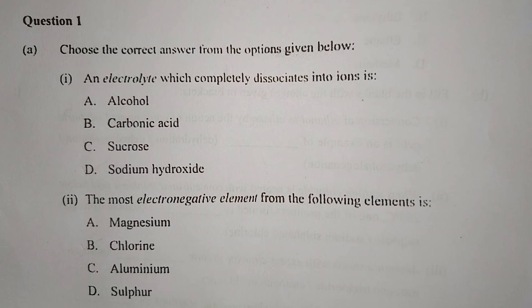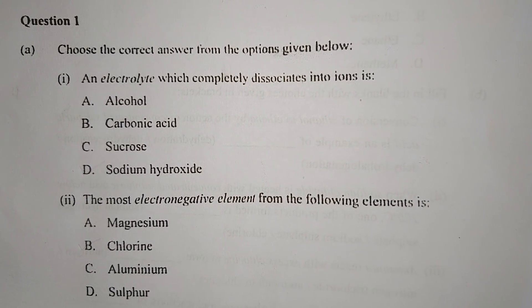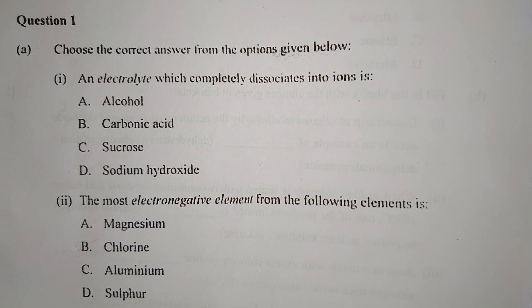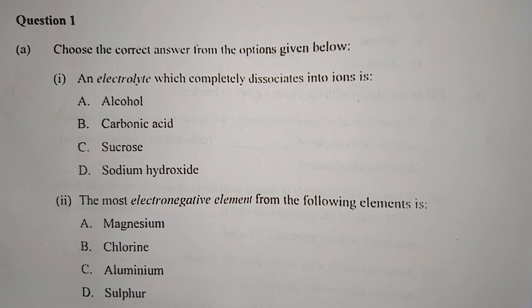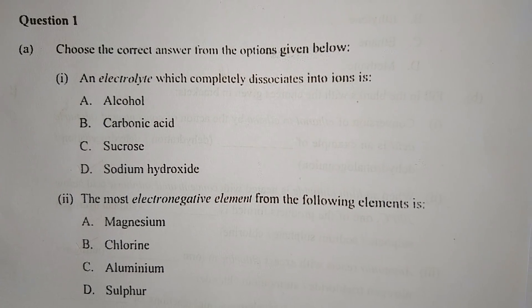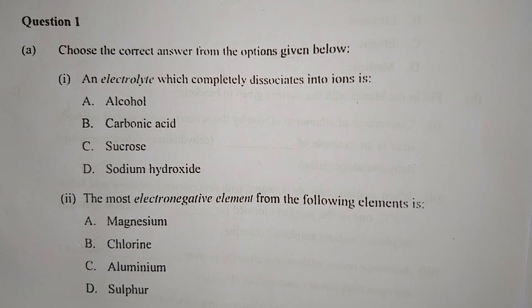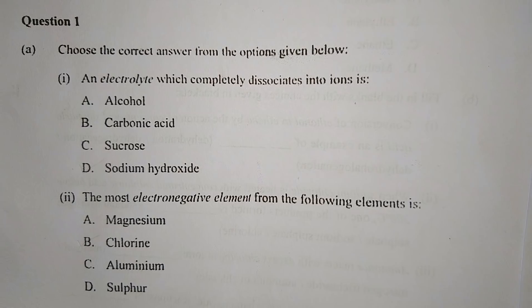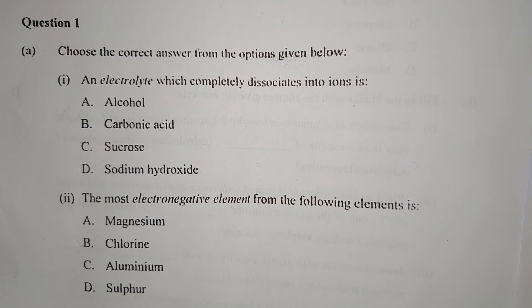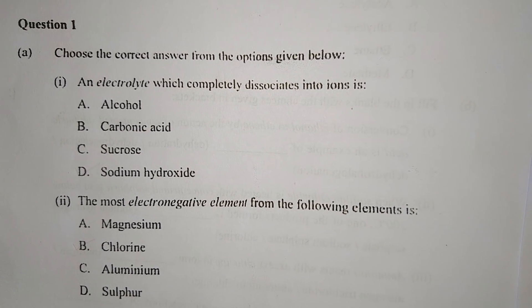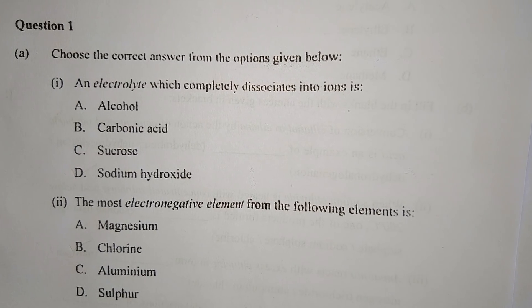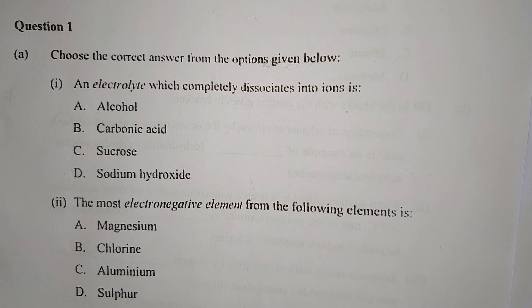Question number one: Choose the correct answer from the options given below. Number one, an electrolyte which completely dissociates into ions is: A. alcohol, B. carbonic acid, C. sucrose, D. sodium hydroxide. In the options you can see A. alcohols and C. sucrose are non-electrolytes, whereas B. carbonic acid is a weak electrolyte that partially dissociates. So the correct answer will be D. sodium hydroxide.